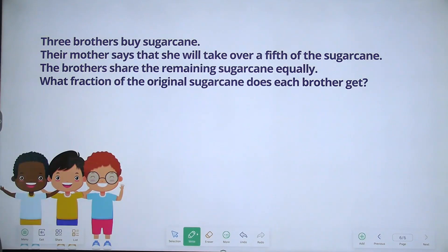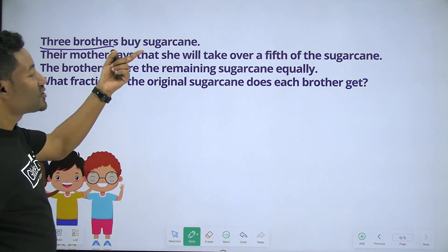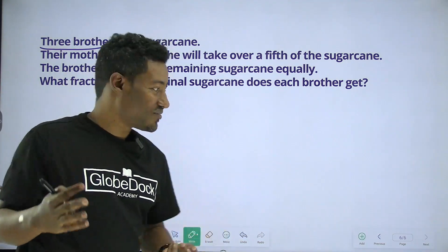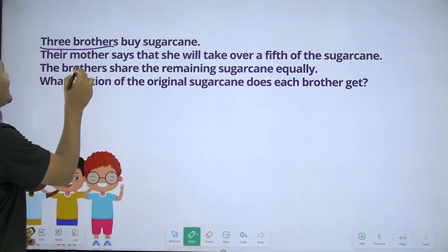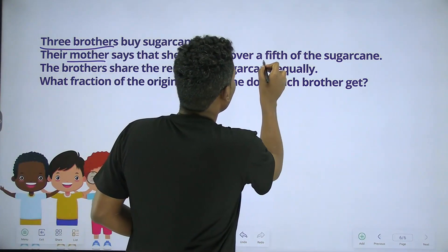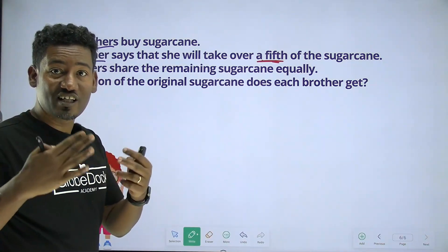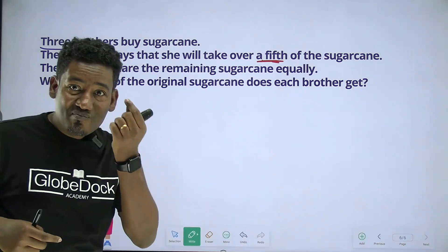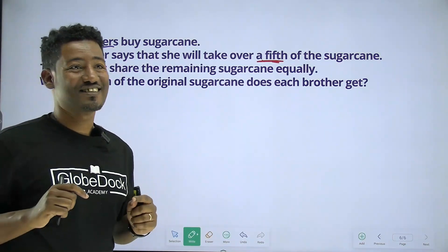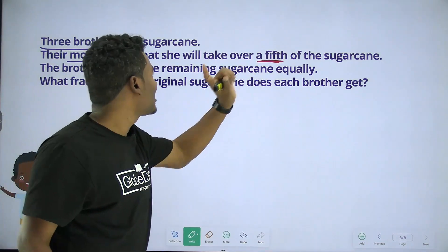The three brothers. Their mother says that she will take over a fifth of the sugarcane. The brothers share the remaining sugarcane equally.